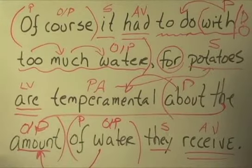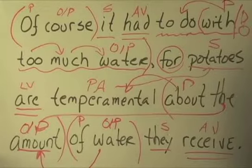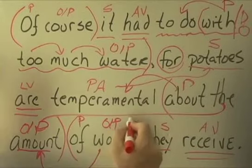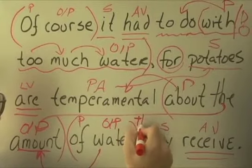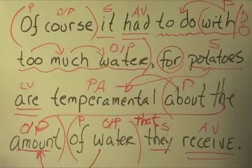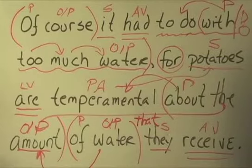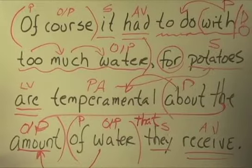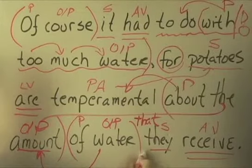And then we have this peculiar, they receive. And in fact, it's not peculiar. What we have not deigned to write in this sentence is the relative pronoun that. If we were to read this clause again, for potatoes are temperamental about the amount of water that they receive. Leave the that in, take the that out. For grammatical purposes we have to understand that it is there.